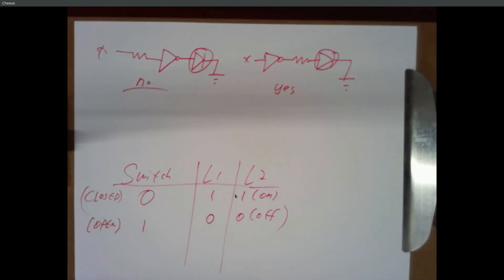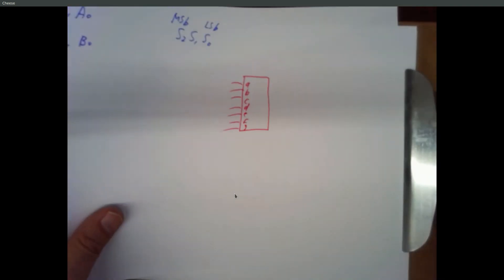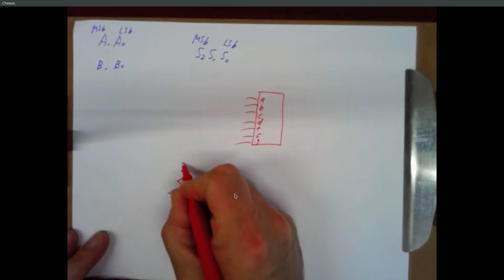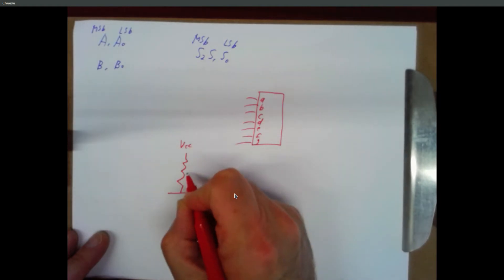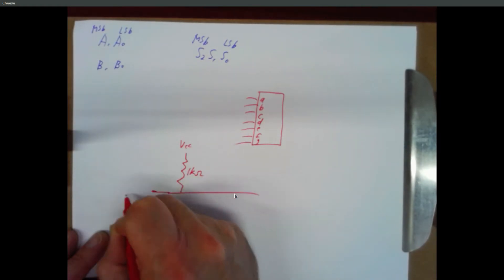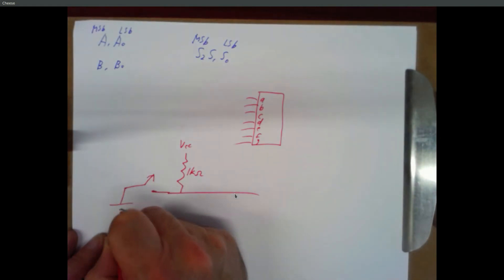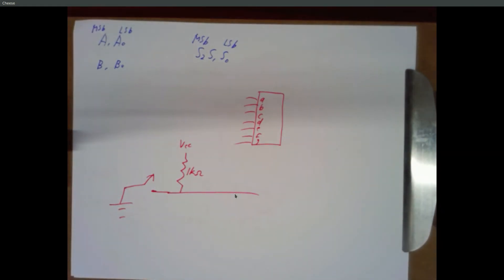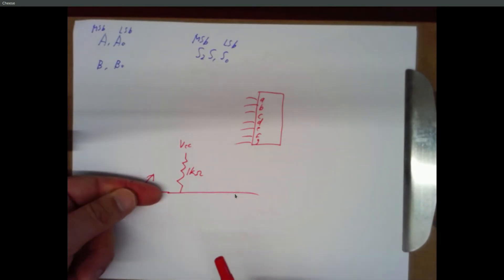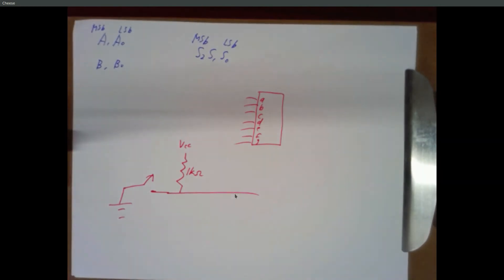Be sure you know how to wire up LEDs and switches. The voltage at the switch node is going to be 5 volts if the switch is open, 0 volts if it's closed — giving you a logic 1 or logic 0.